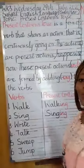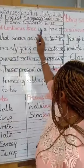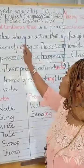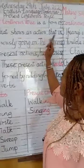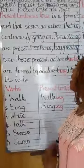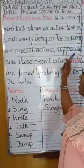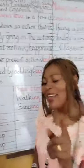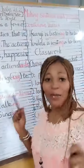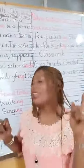What is present continuous tense? Present continuous tense is a form of word that shows an action that is continuously going on. The actions are present actions happening now. I'm dancing now. I'm singing now. It's happening now.